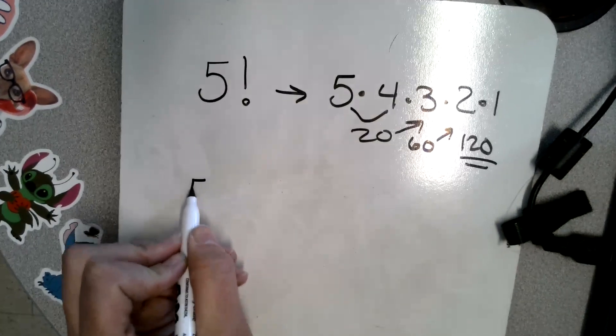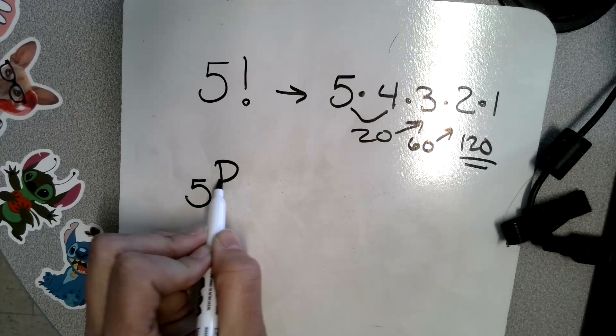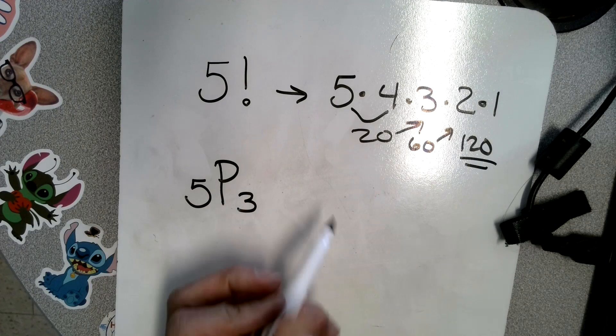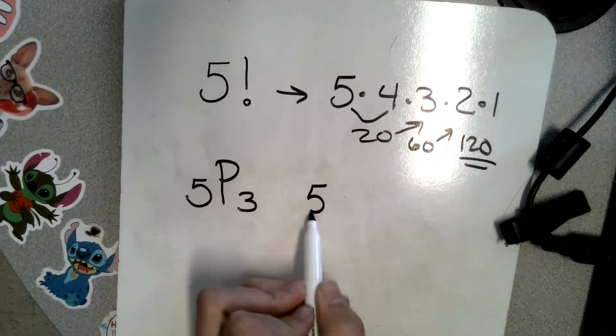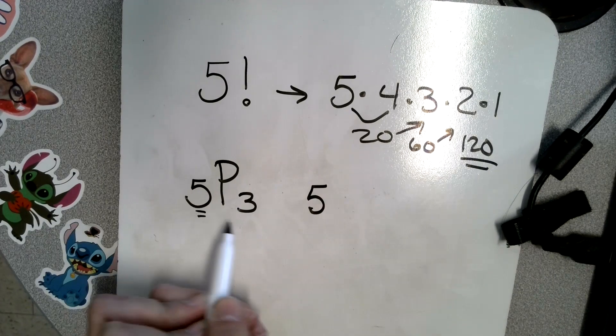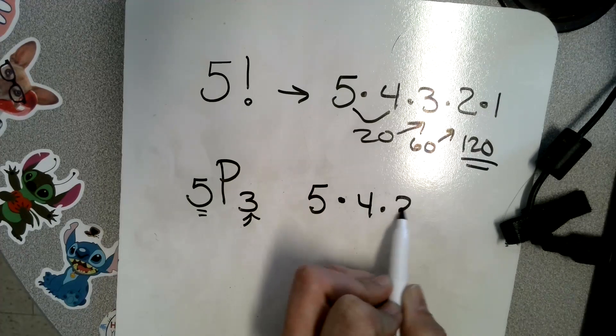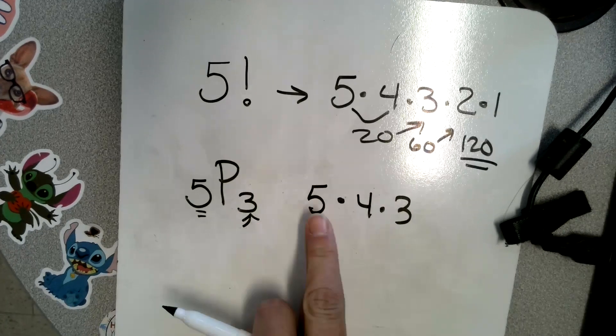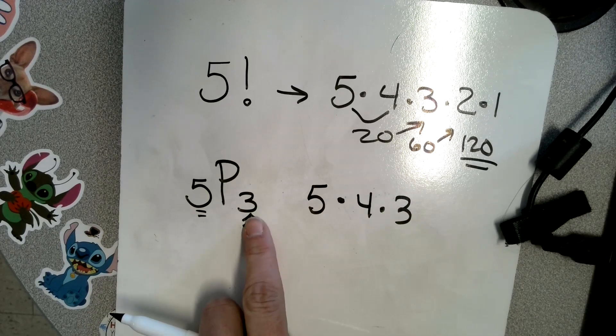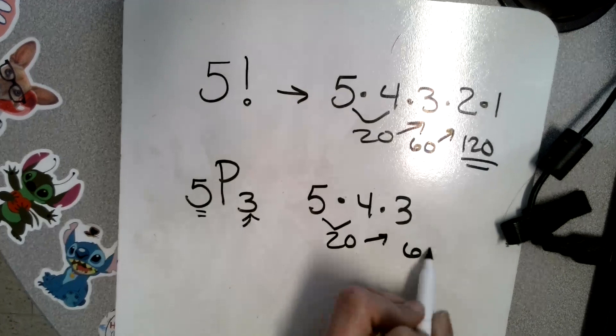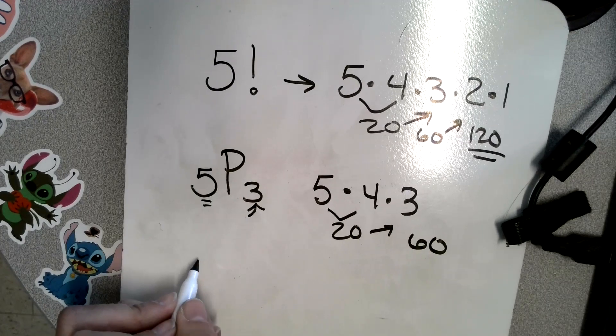Then we have the permutations, which are like five things taken three at a time. So if we have five numbers and we want them grouped three at a time, then we start with the five. Remember, we start with this number, and this is how many numbers we use. So it's not what number we go to, it's just how many we use. So one, two, three digits, that's what that stands for. So this had 20, and then times three, which would be 60.